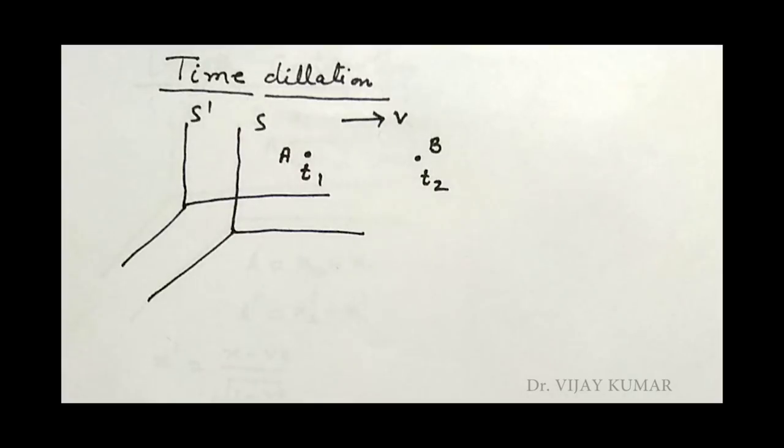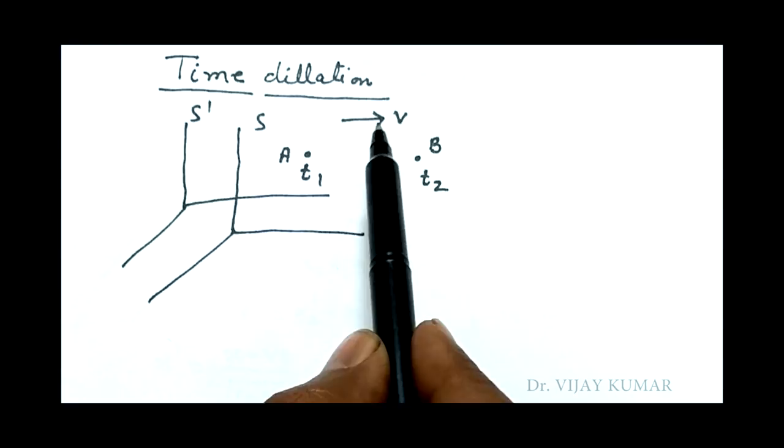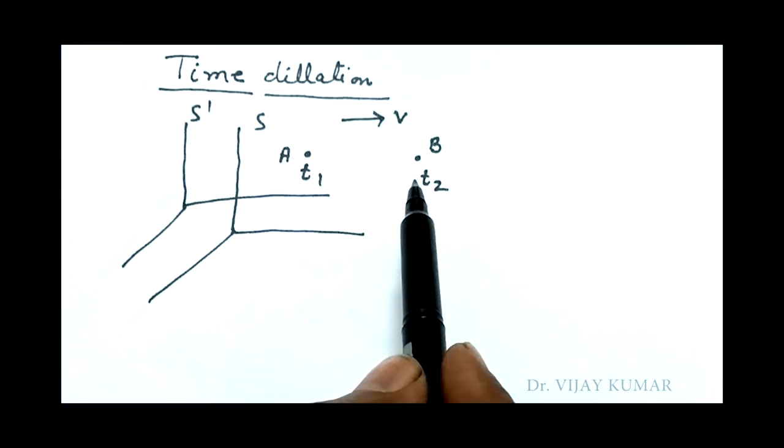Now I will teach about time dilation. Suppose there are two frames of reference S and S dash. The relative velocity of both frames is V, and an event started at time t1 and finished at time t2.